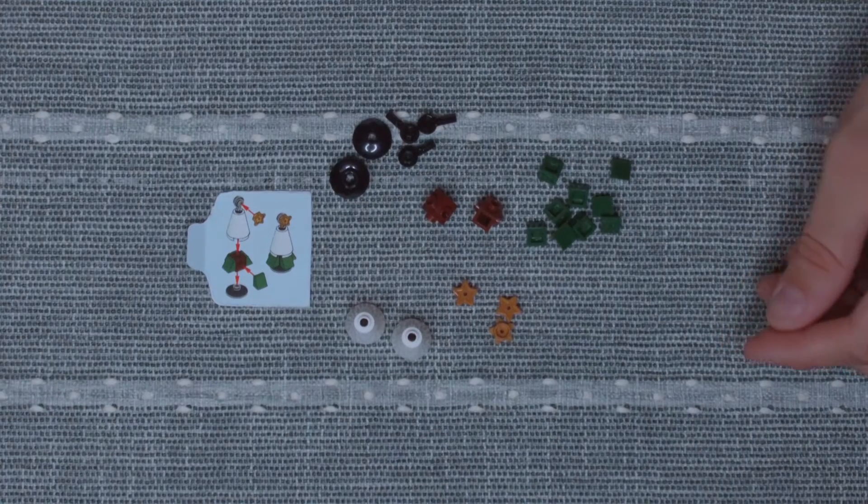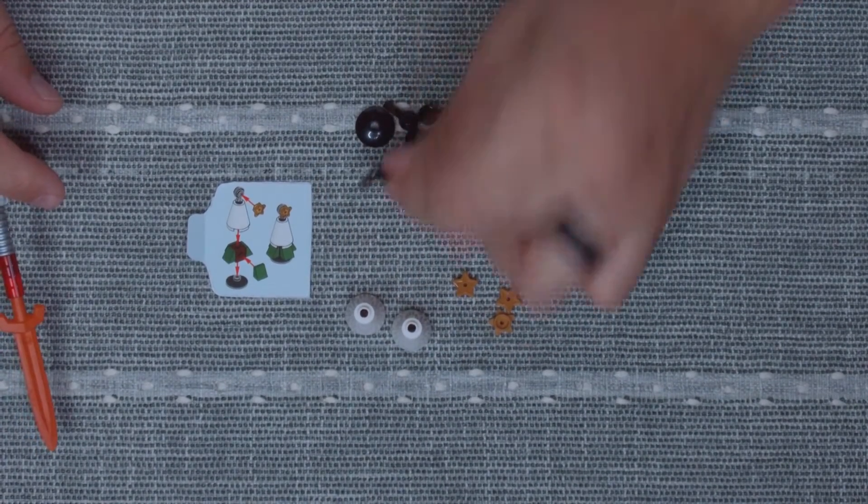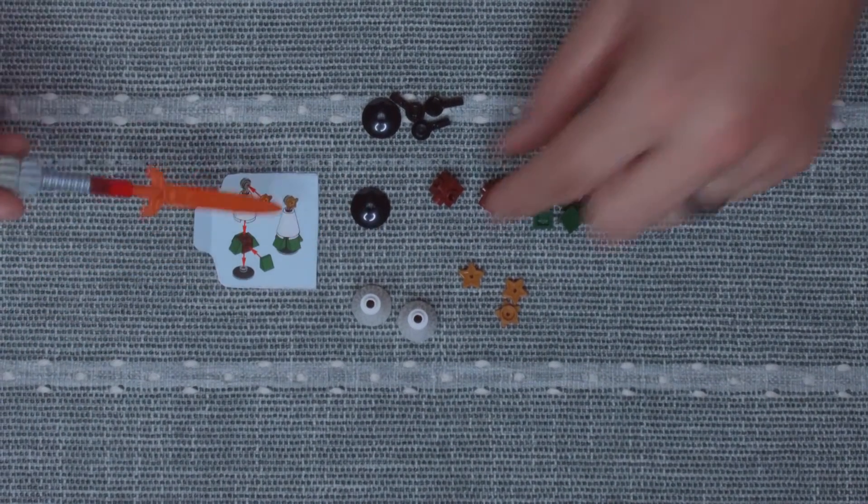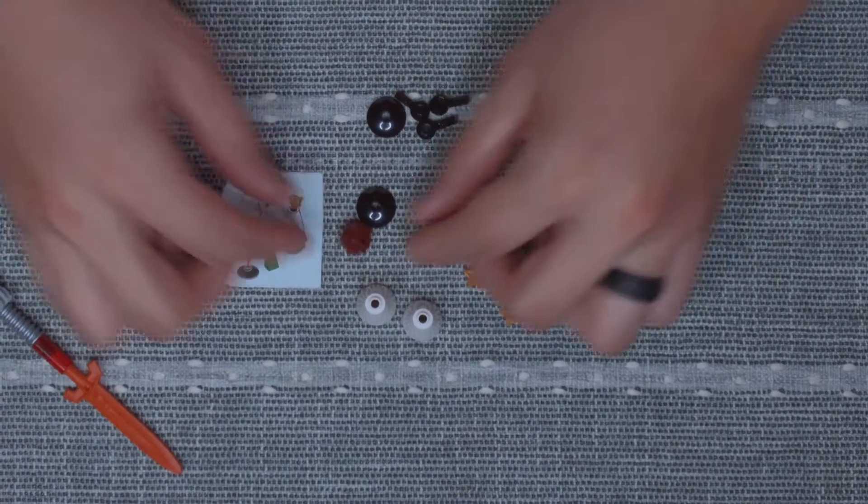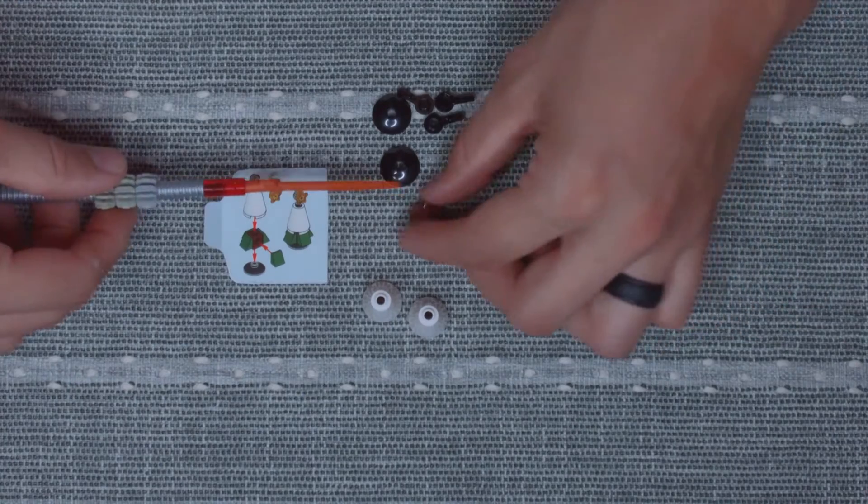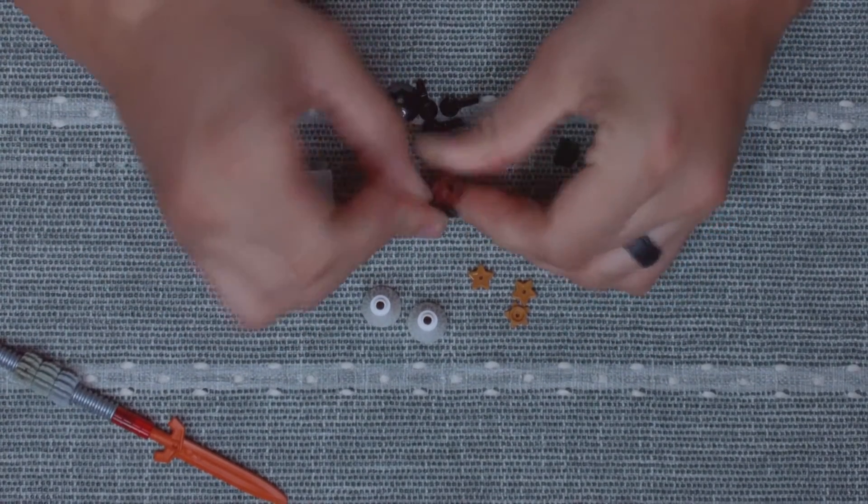It looks like we're going to start with these round dish pieces as the base. And then on top of that, we're going to put these brown cubes that have studs on every side. That's going to go on the base.